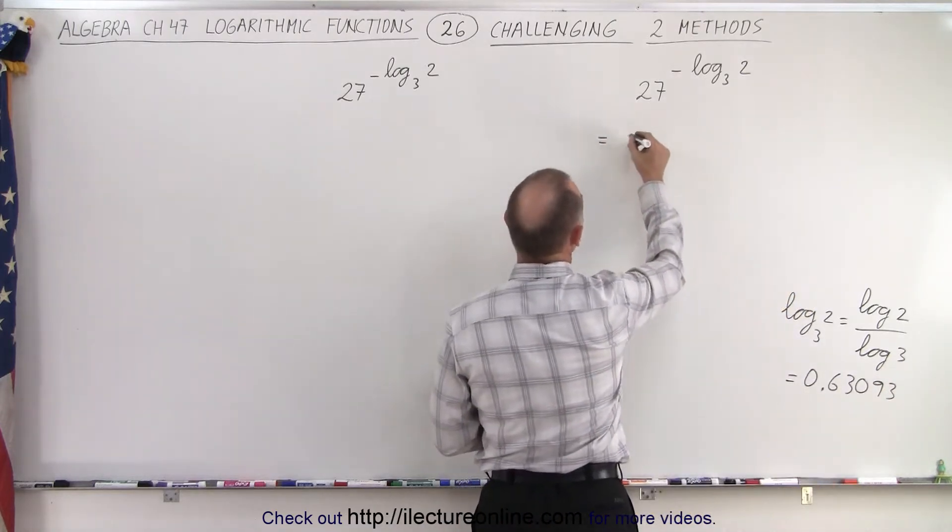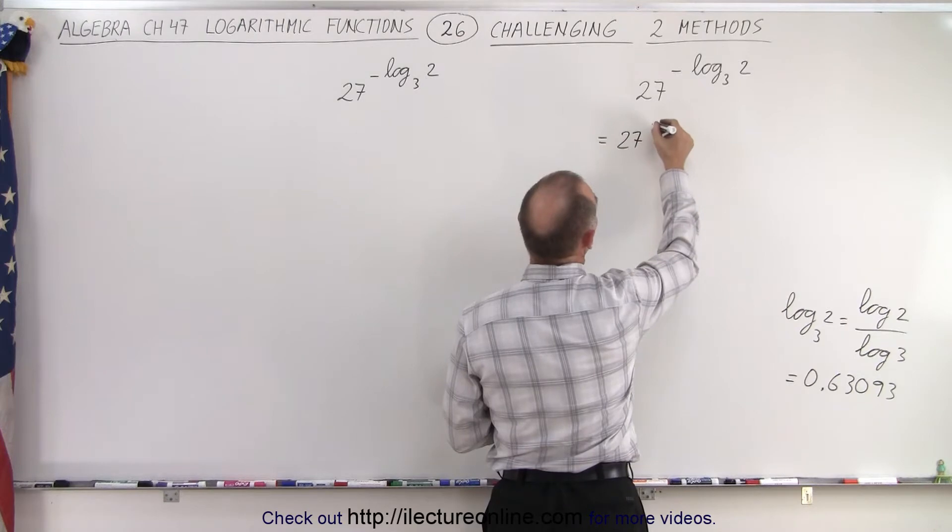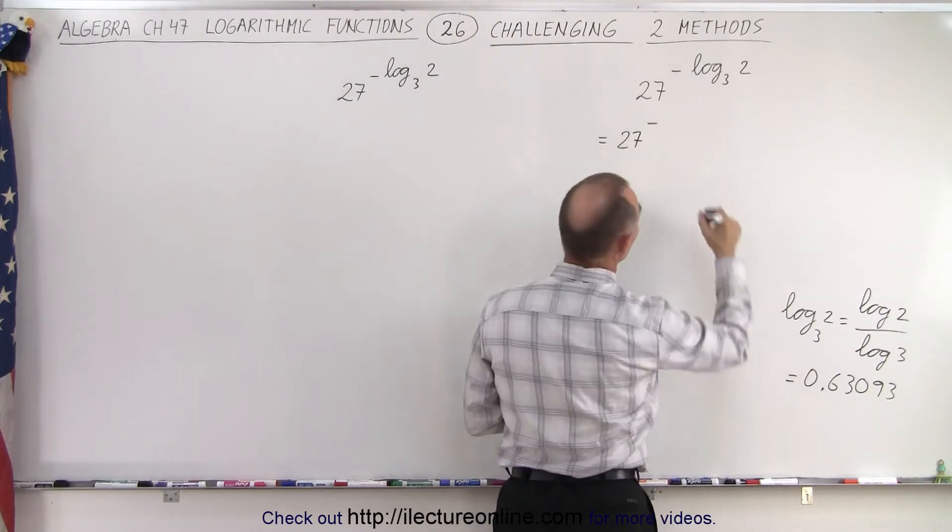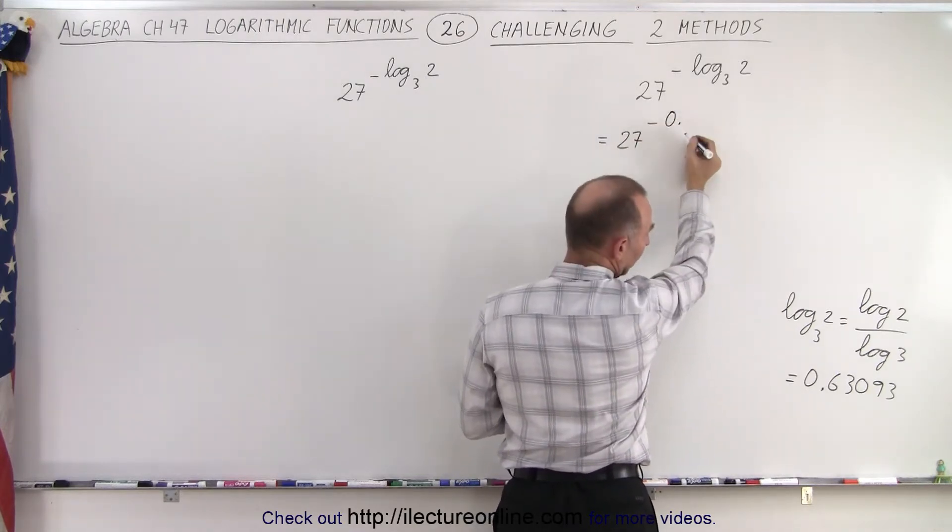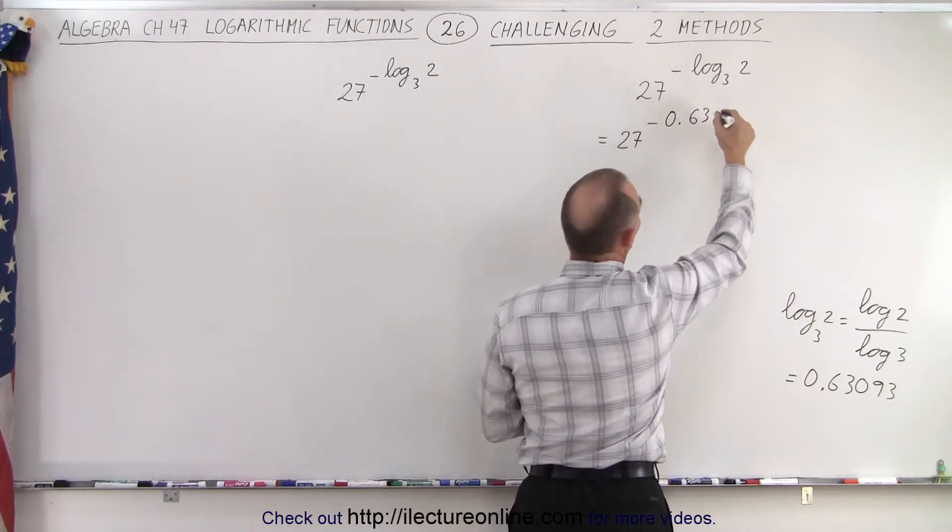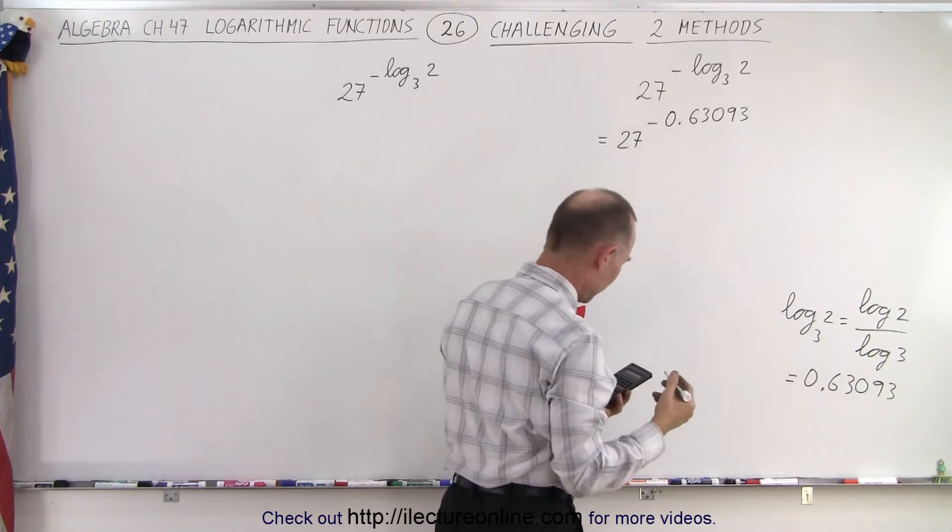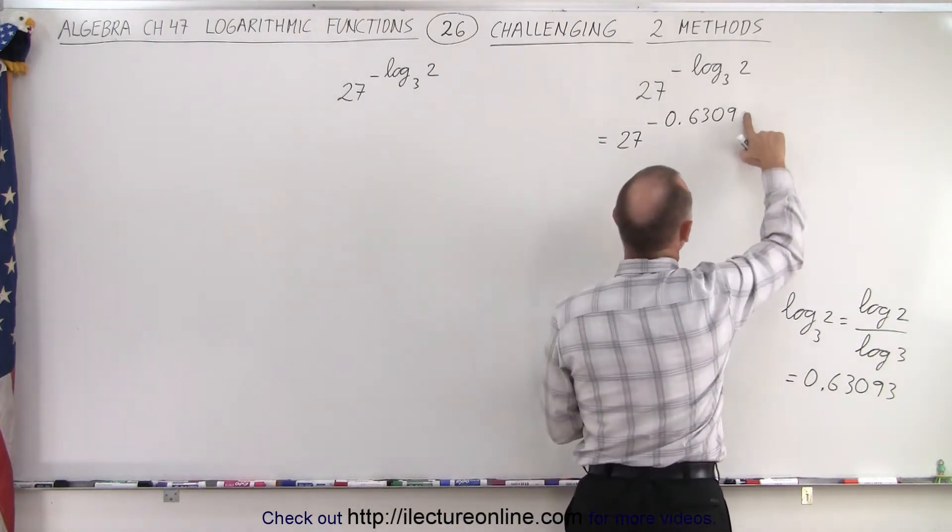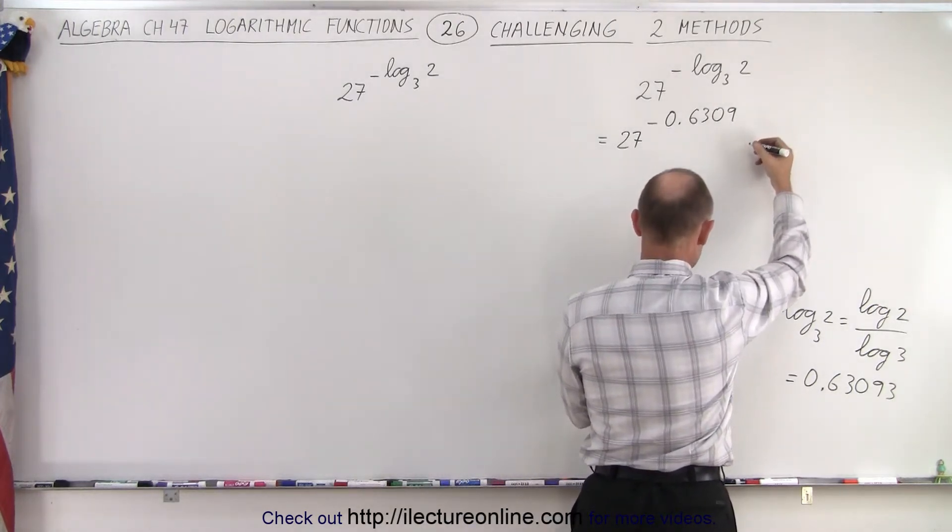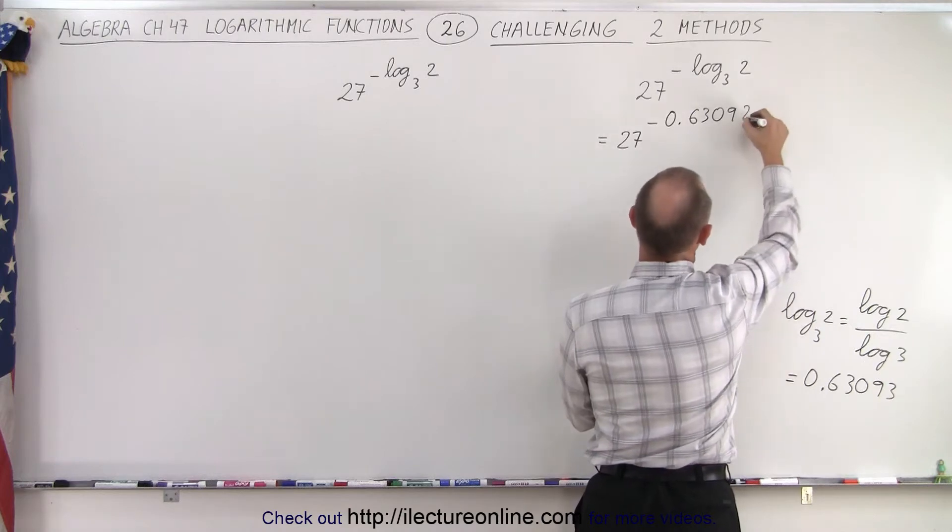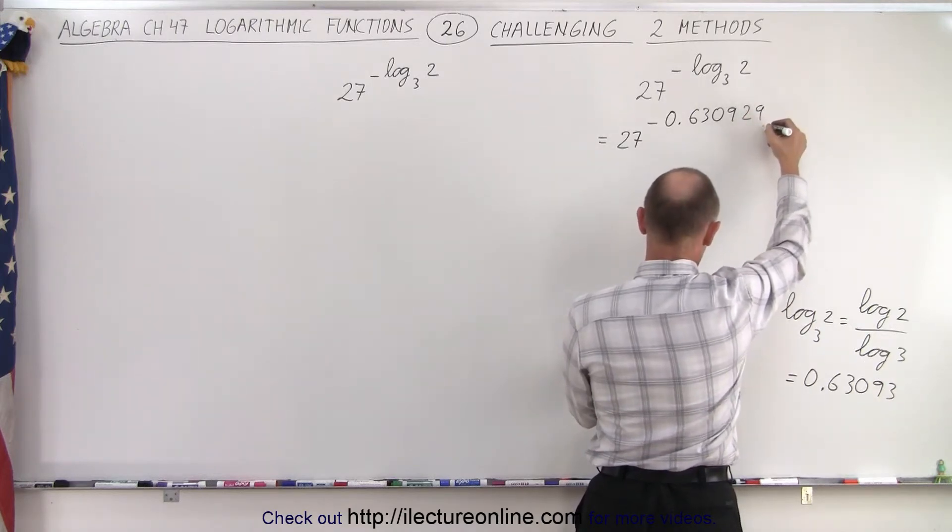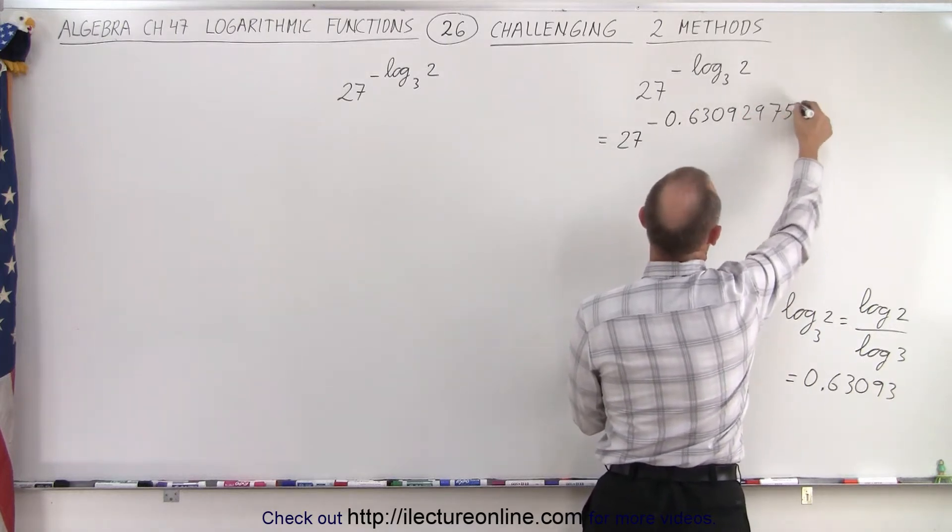So then you say, well, this can now be written as 27 raised to the minus 0.63093 power. And maybe I can put a few more decimal places in there to get it really accurate. So that would be 929753.